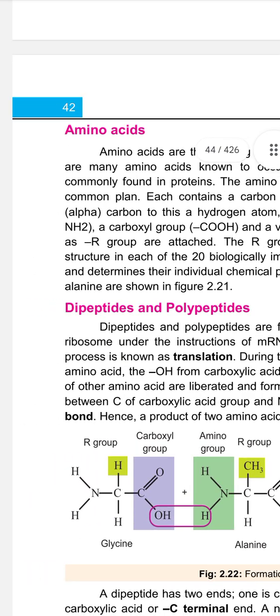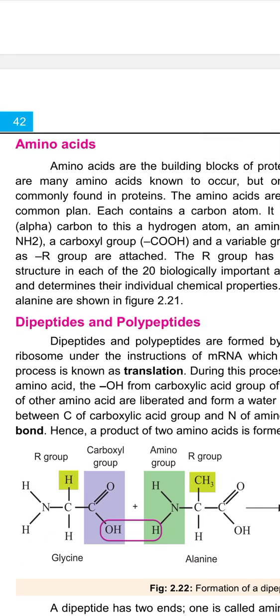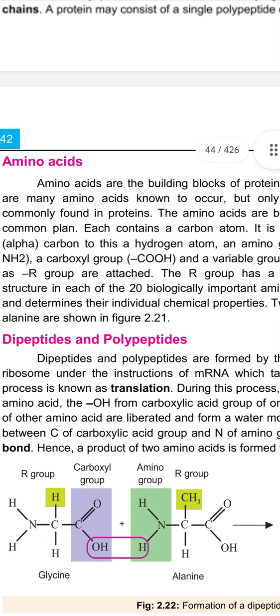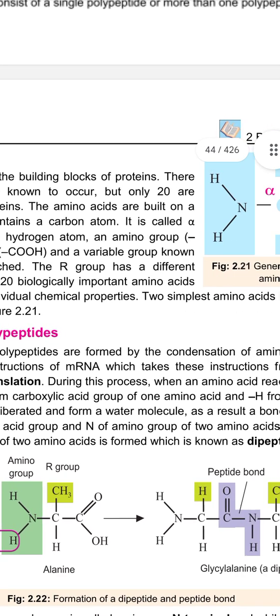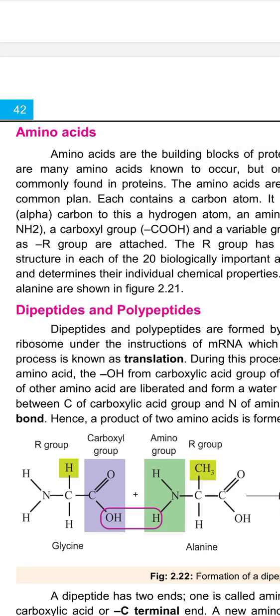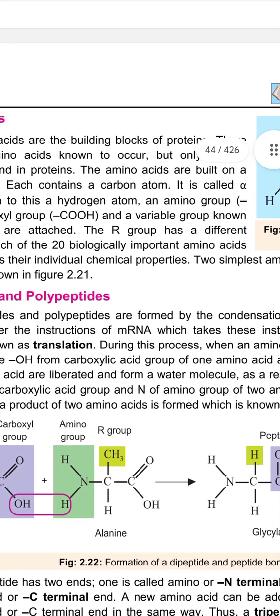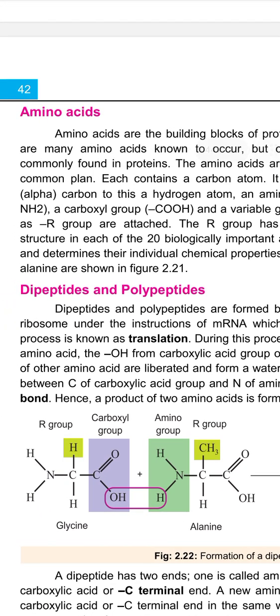Amino acids are built on a common plan — a common structure. Each contains a central carbon atom called alpha carbon. Attached to it are: a hydrogen atom, an amino group (NH2), a carboxyl group (COOH), and a variable group known as the R group. The R group is different in each of the 20 biologically important amino acids and determines their individual chemical properties.